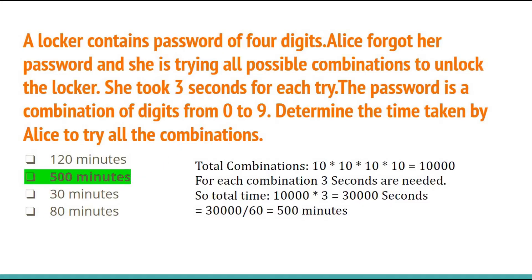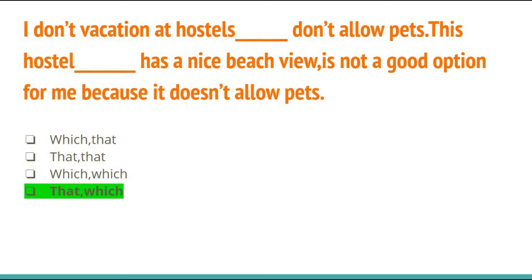The next question: 'I don't want vacations at hostels ___ don't allow pets. This hostel ___ has a nice beach view is not a good option for me because it does not allow pets.' In the first blank it will be 'that' and in the second blank it will be 'which'.